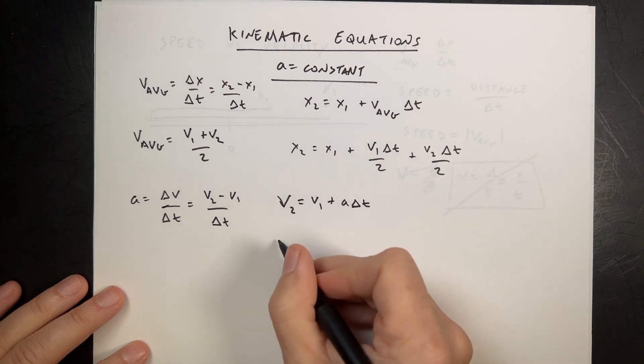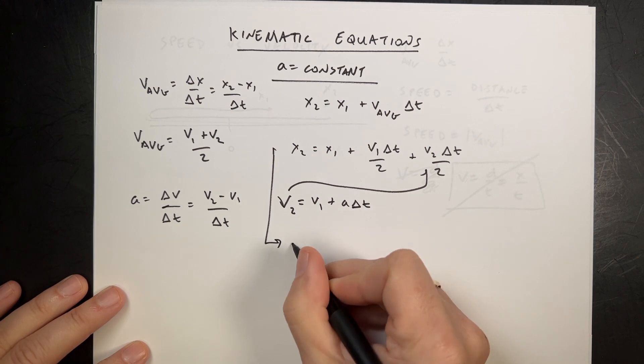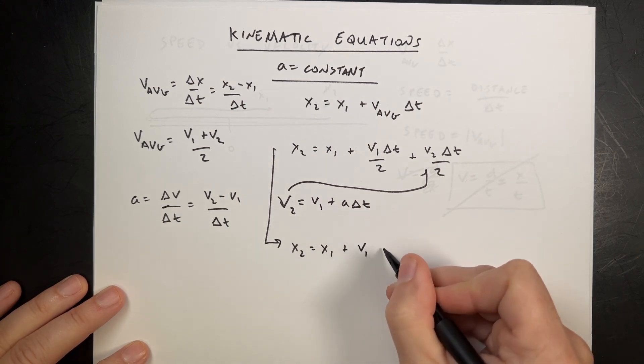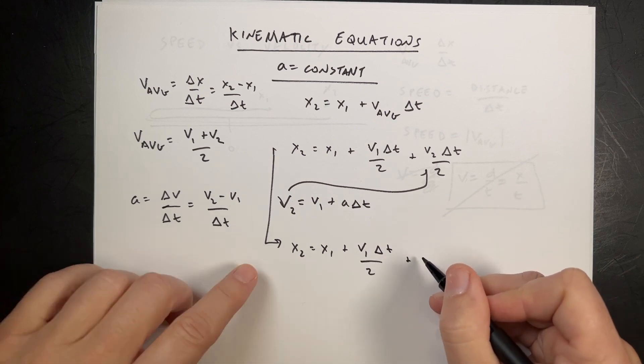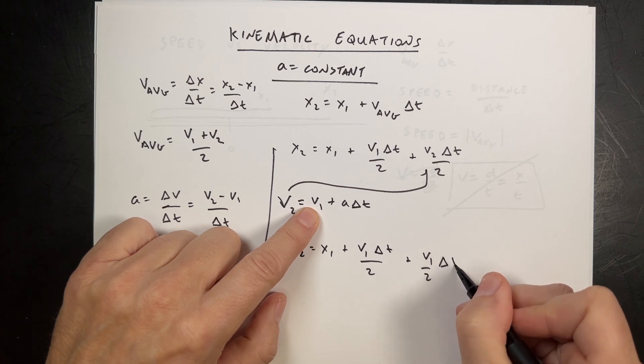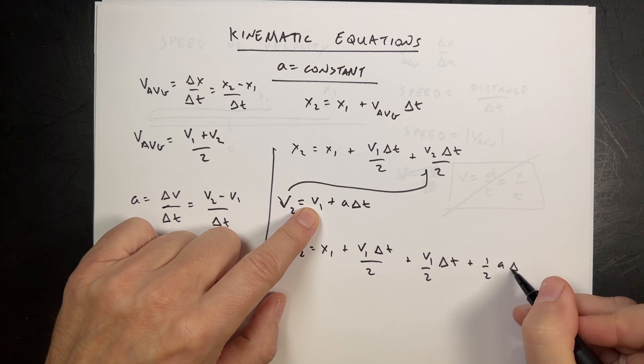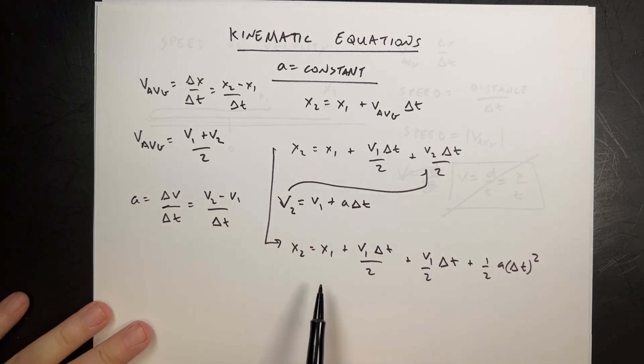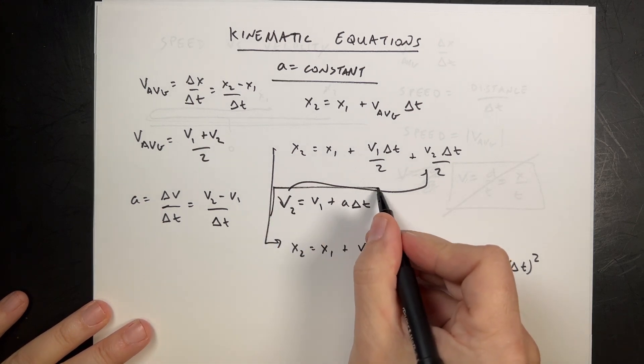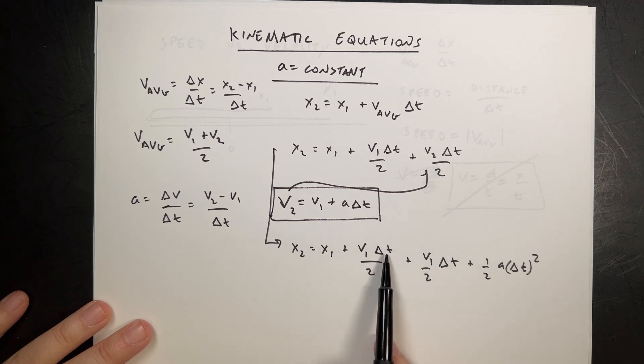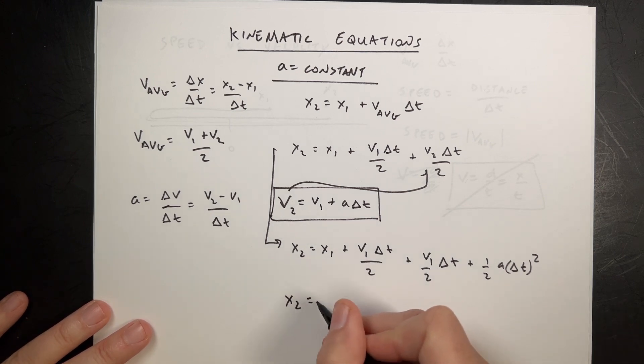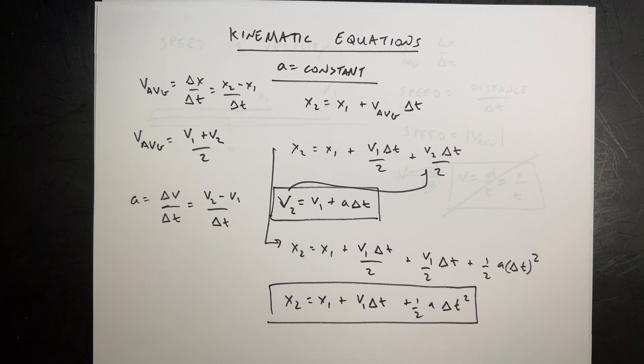Now, if I substitute that in, I get x2 equals x1 plus v1 delta t over 2 plus v1 over 2 delta t plus 1/2 a delta t squared. And if I add these two terms together, this is an important equation right there. That's one of the kinematic equations. I have v1 delta t over 2 and v1 delta t over 2, they add up to v1 delta t, and I get x2 equals x1 plus v1 delta t plus 1/2 a delta t squared. And that's the next kinematic equation. So now I have two. There's a whole bunch of these, but really, these are the two most important ones.